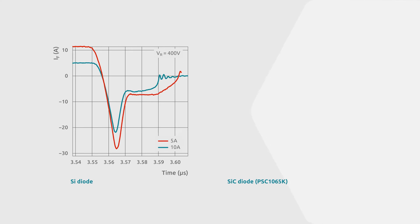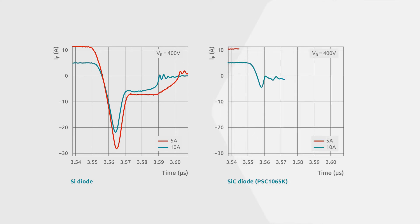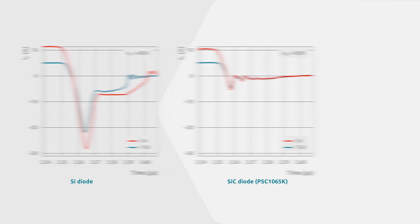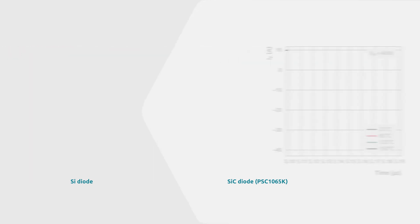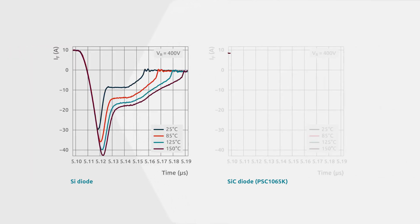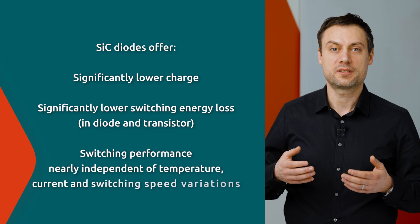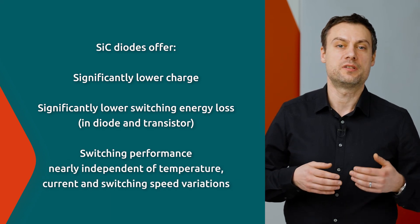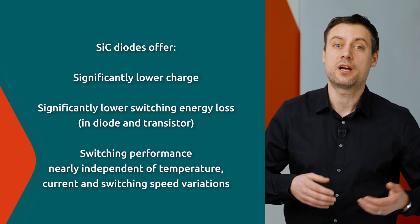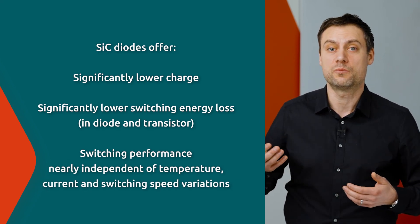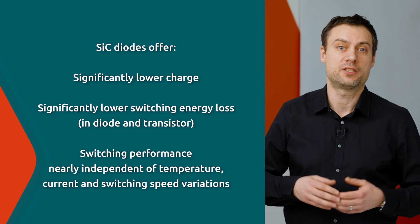When we compare the turn-off behavior of a state-of-the-art fast recovery silicon diode with the Nexperia silicon carbide diode in a double-pulse setup, the significant differences in switching times, reverse current spike, and charge are clearly visible. These specific device characteristics enable hardware designers to achieve higher efficiency and higher power in smaller form factors in their power applications.